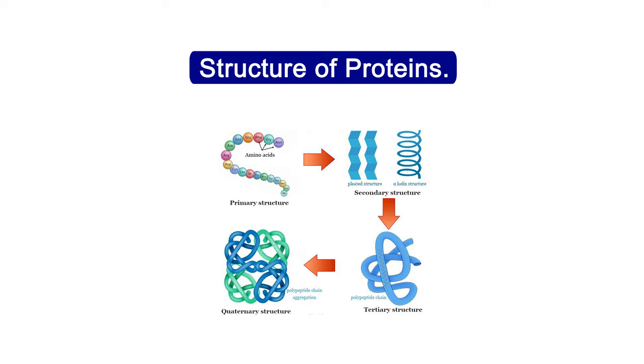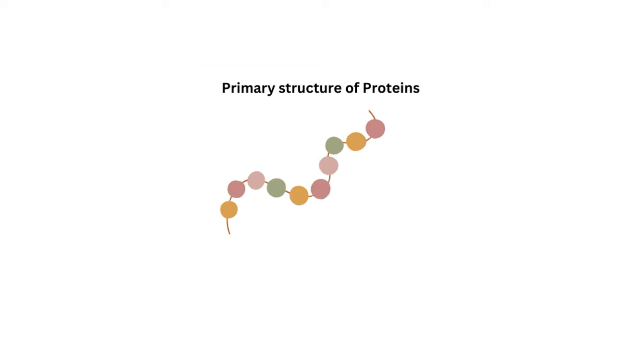The shape of a protein is critical to its function because it determines whether the protein can interact with other molecules. Protein structure depends on its amino acid sequence and local low energy chemical bonds between atoms in both the polypeptide backbone and in amino acid side chains.